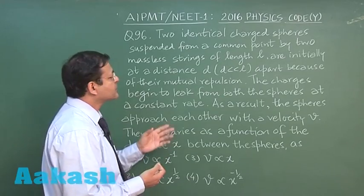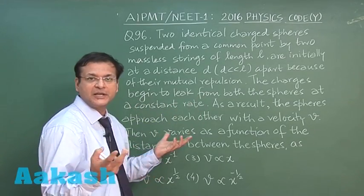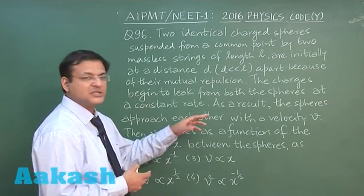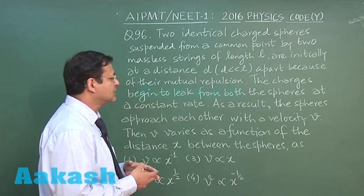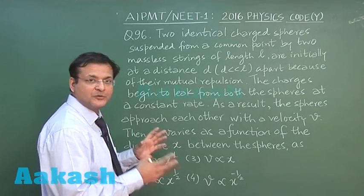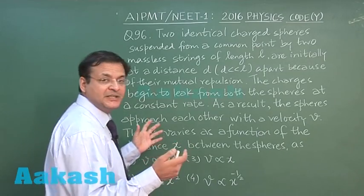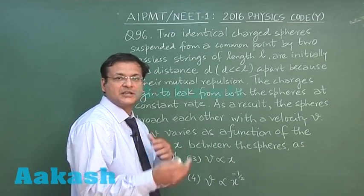Now the charges begin to leak from both the spheres, so naturally the repulsion will be getting reduced. As a result the spheres approach each other with a velocity v. You have to find out how v is dependent on x.